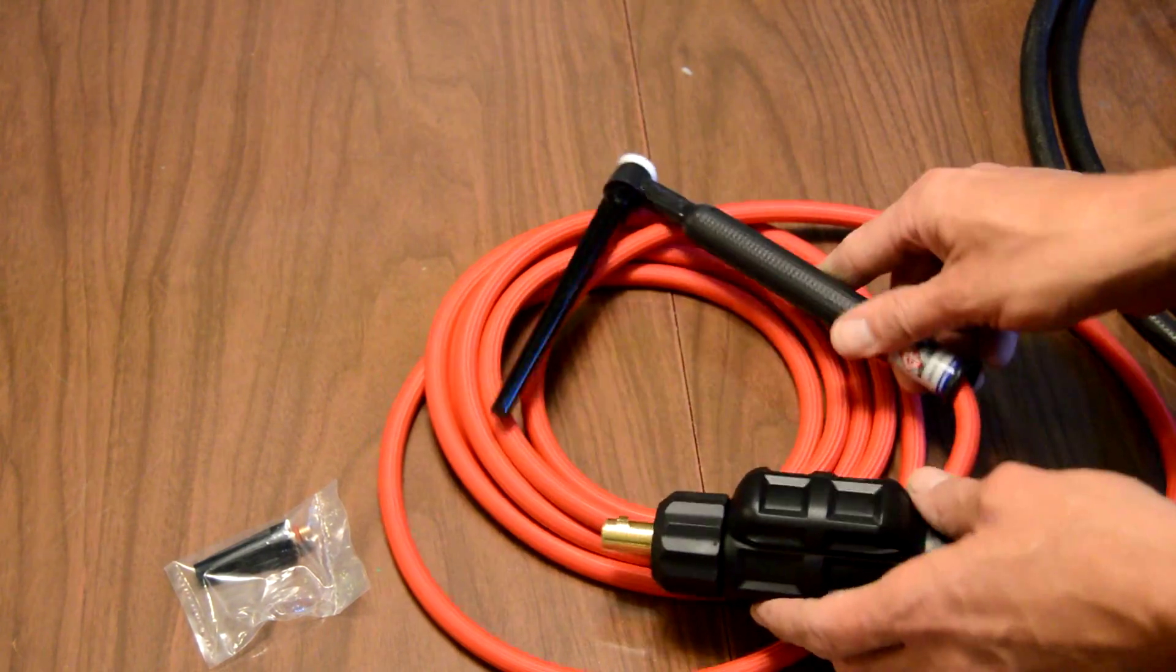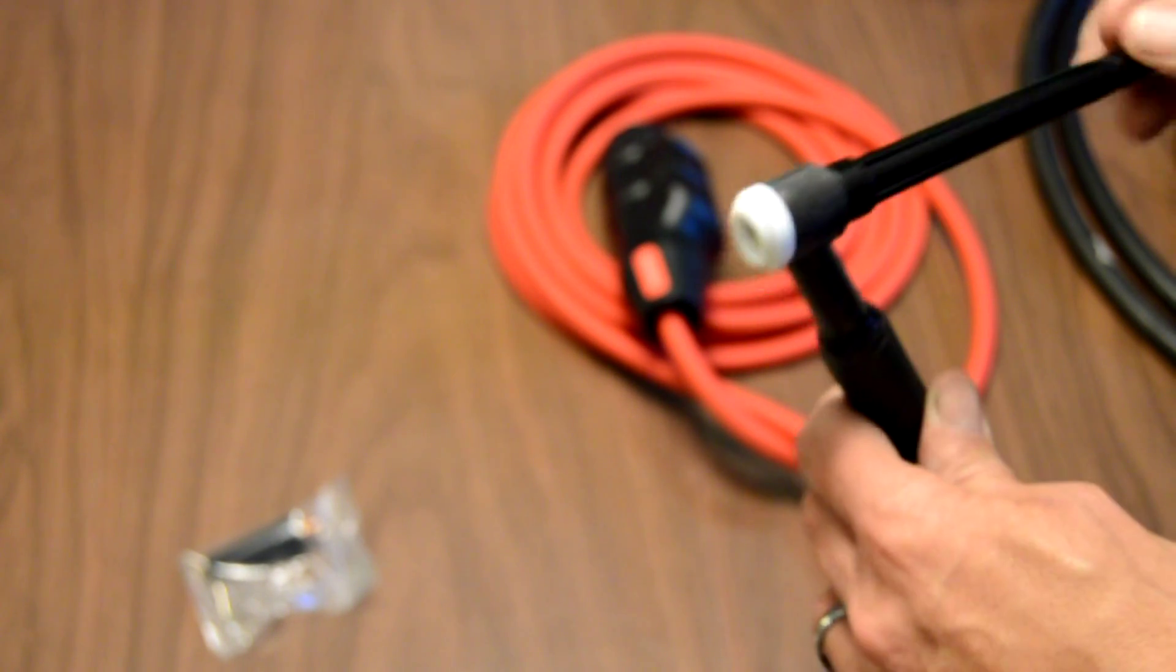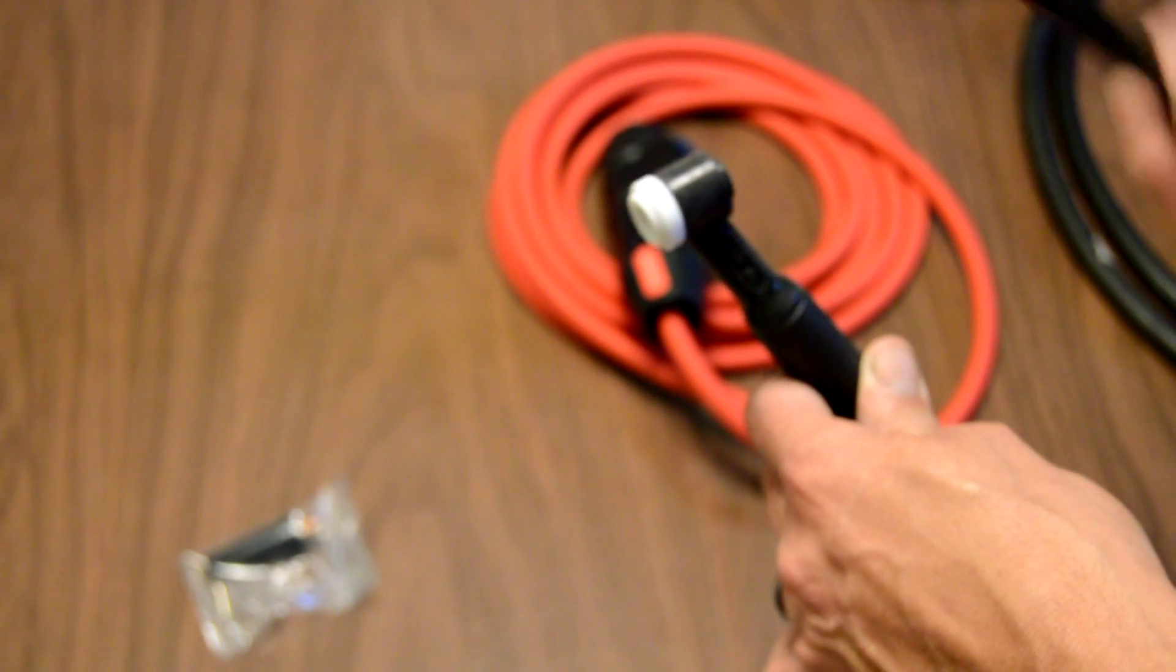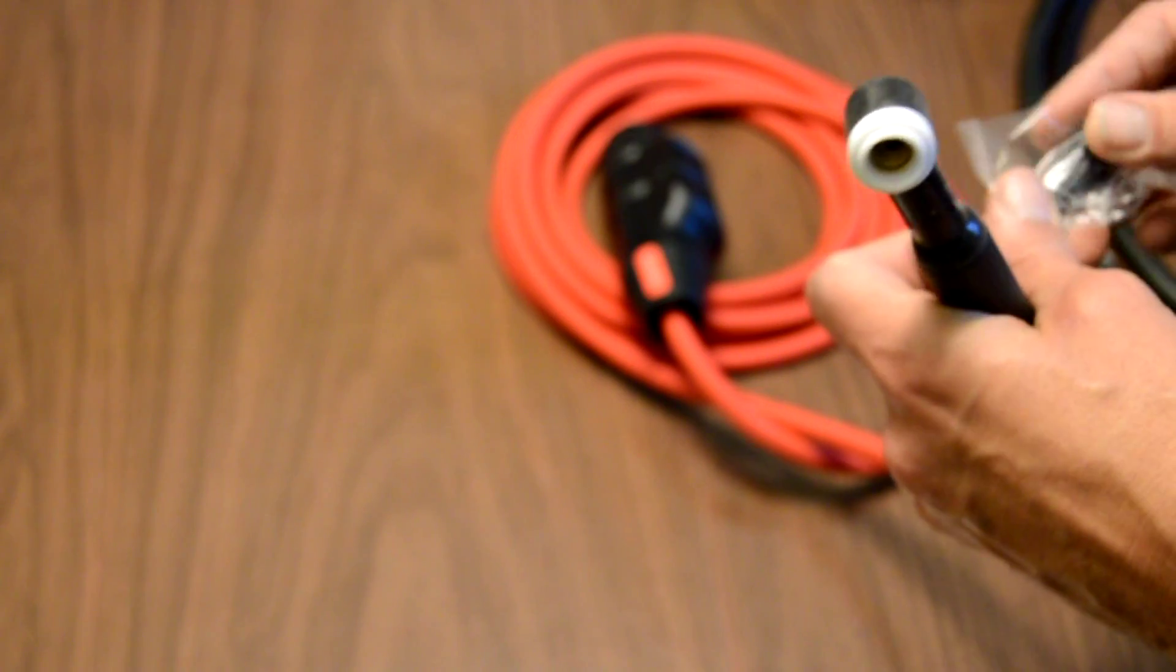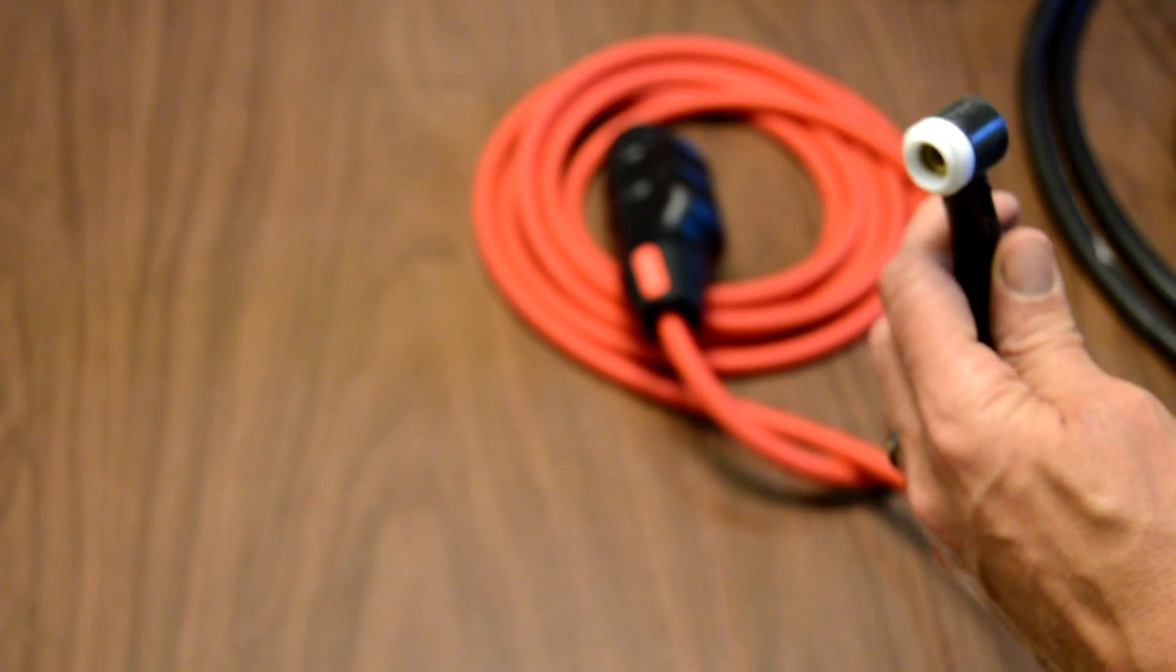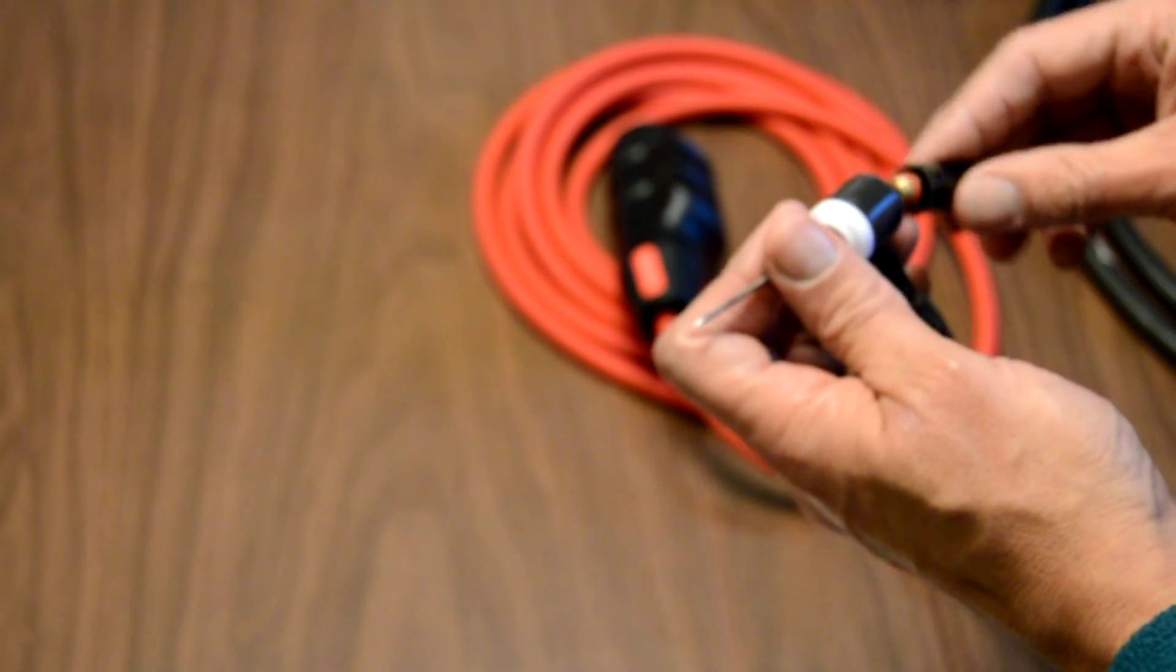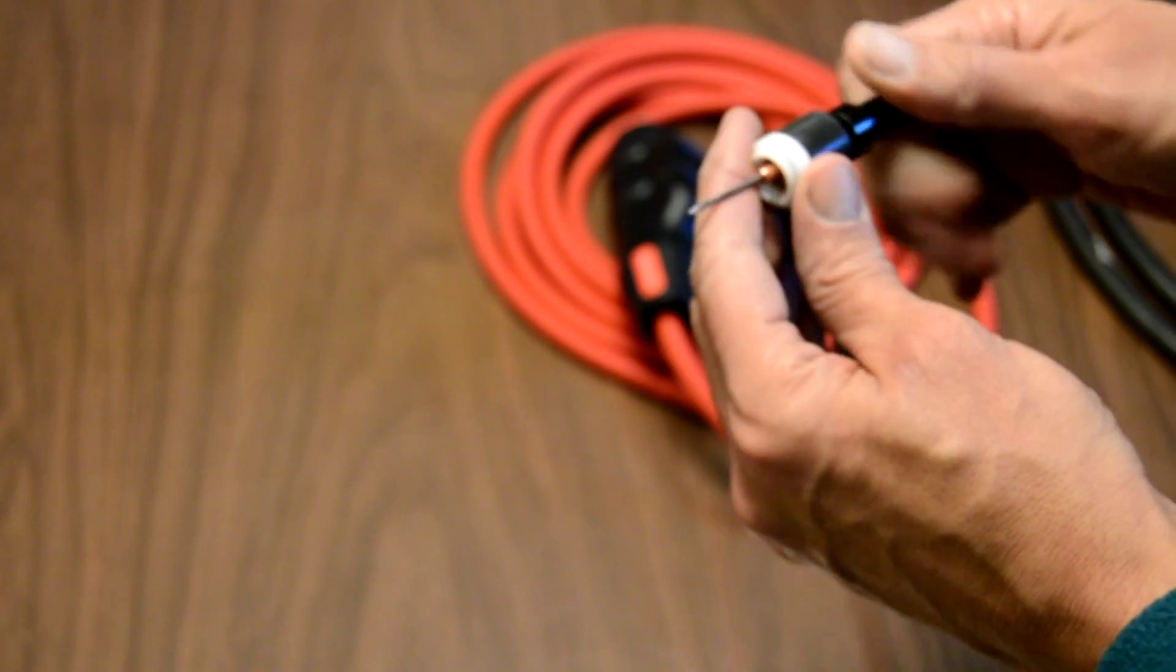You tighten that up in there. Pretty straightforward. I'll go with the short back cap here. A little two percent lanthanated tungsten there.